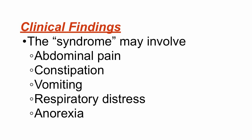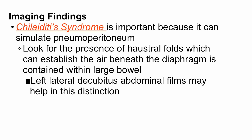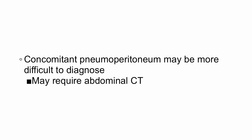Imaging findings of Chilaiditi syndrome are important because it can simulate pneumoperitoneum — you end up doing a very expensive CT scan for something that's totally benign. Look for the presence of haustral folds within the bowel, which can establish that the air beneath the diaphragm is actually contained within the large bowel and not just free-floating. A left lateral decubitus abdominal film may help make this difference, because you can see that left border a lot better. If there's doubt because the patient has severe abdominal pain or peritonitis, then you have to do an abdominal CT scan.